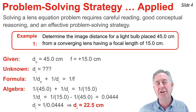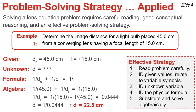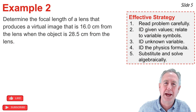To review the problem-solving strategy: step one, read carefully; step two, extract numerical values and relate them to variable symbols in the lens equation; step three, identify the unknown variable; step four, write down the lens equation; step five, substitute given values and perform proper algebra to solve for the unknown. Here is our second of four examples.